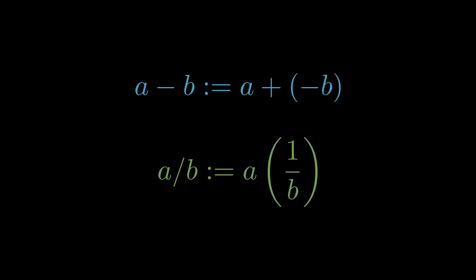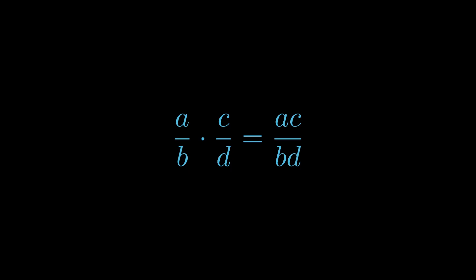We can now prove that our typical manipulations of real numbers hold. As an example, let us verify that multiplying fractions works as expected. Before we can jump straight into the proof, it will be helpful to prove two simpler statements that we can use to help us with the main proof. In mathematics, preliminary results like these are called lemmas. Lemmas help make the main proofs cleaner and easier to follow.